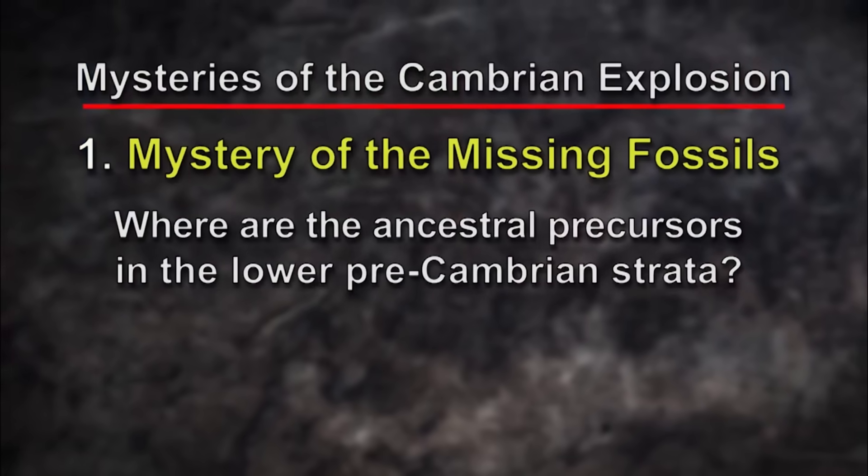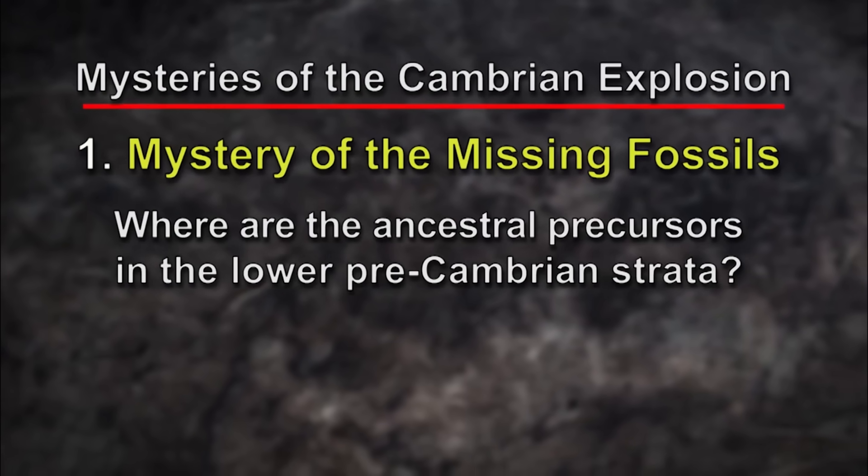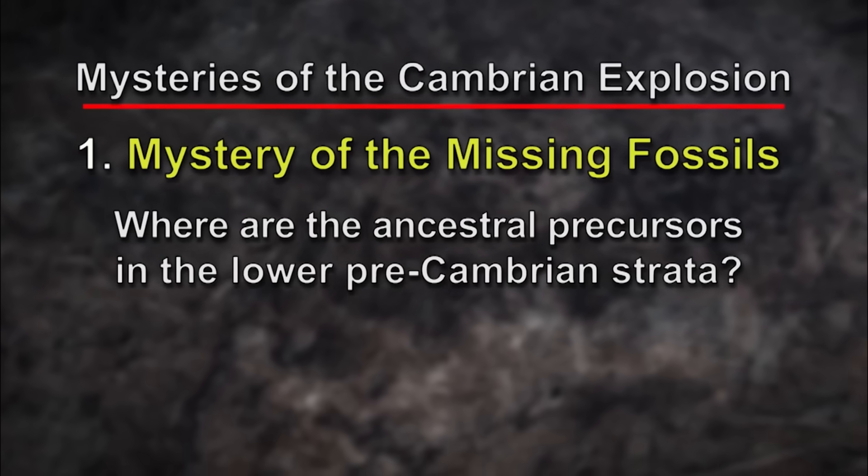In my book Darwin's Doubt, I talk about two great mysteries. The first mystery is pretty easy to comprehend — it's the mystery of the missing fossils. They're simply not there. What we expected to see in the lower Precambrian layers are not there.